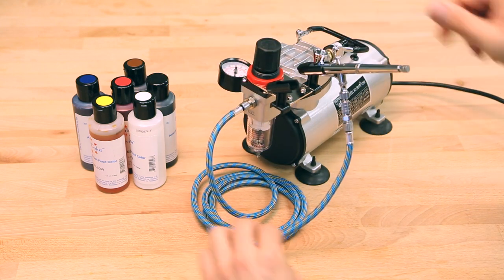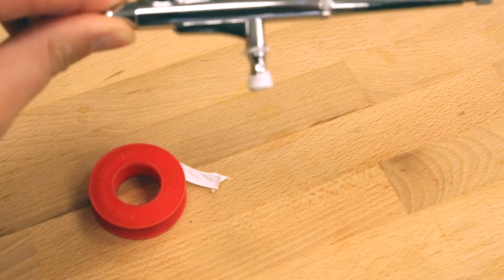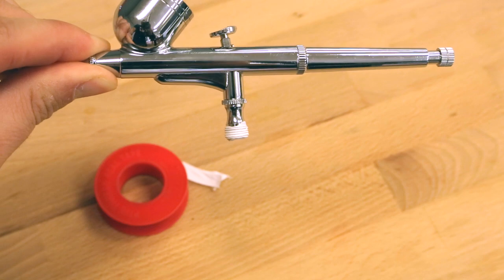When making your connections, be sure to only hand tighten so you don't strip the threads. A pro tip would be to use Teflon tape to ensure an airtight seal.